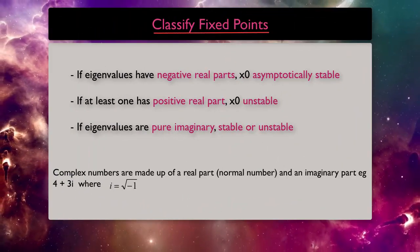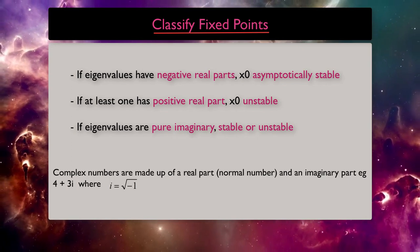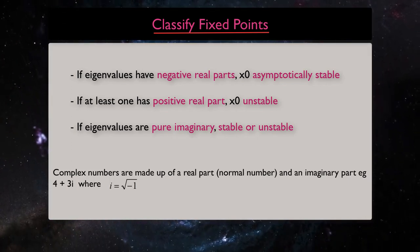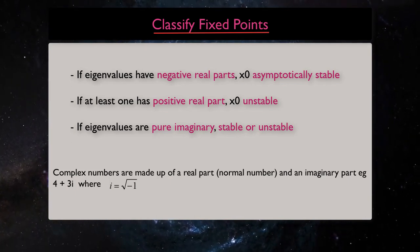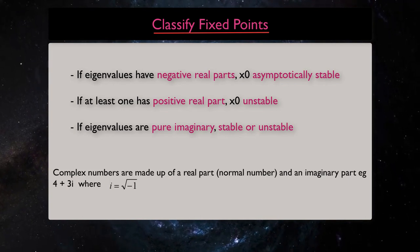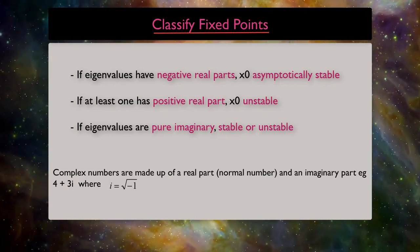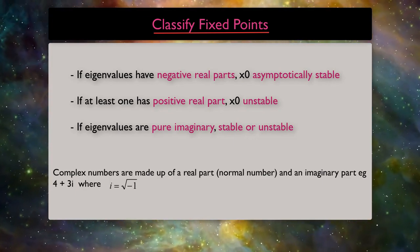If eigenvalues have negative real parts, then x0 is asymptotically stable. But if at least one of them have one positive real part, then the fixed point is unstable. If eigenvalues are pure imaginary, they can be either stable or unstable.